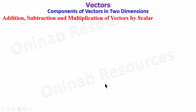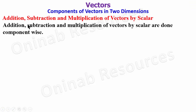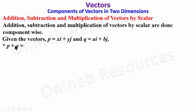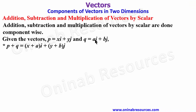We then go to addition, subtraction, and multiplication of vectors by scalar. Given vectors p = xi + yj and q = ai + bj, vectors are added component-wise: p + q = (x + a)i + (y + b)j. It's just like collecting like terms in algebra.